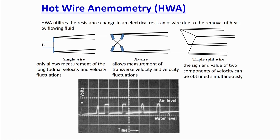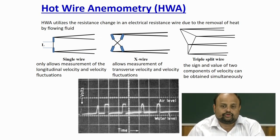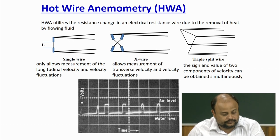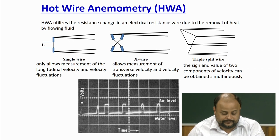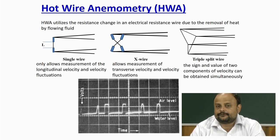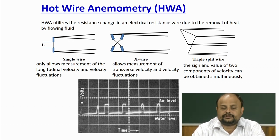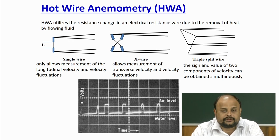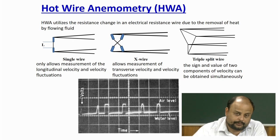Another technique widely used up to the late 1990s to measure velocity field in multiphase flow is hot wire anemometry. Hot wire anemometry is widely used in single-phase flow measurement, such as wind tunnel velocity measurement and aerodynamics applications. The technique was originally derived for single-phase flow and people have tried to use it for multiphase flow, but we face some problems even now in implementing hot wire anemometry in multiphase flow, which we will discuss.